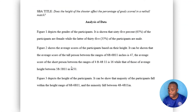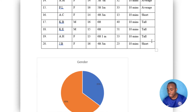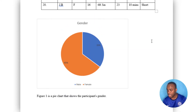Let's go and mark an SBA together. In this SBA, the title was: does the height of the shooter affect the percentage of goals scored in a netball match? Figure 1 depicts the gender of the participants. It is shown that 65% of the participants are female, while 35% of the participants are male. I have the presentation right here and they have that graph to support it, so that's coherent — that's what the graph says.